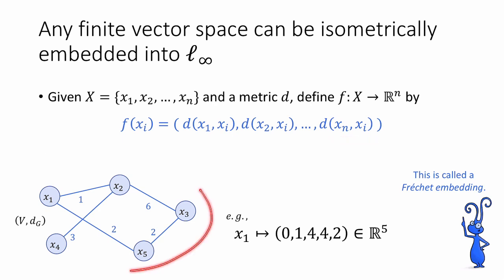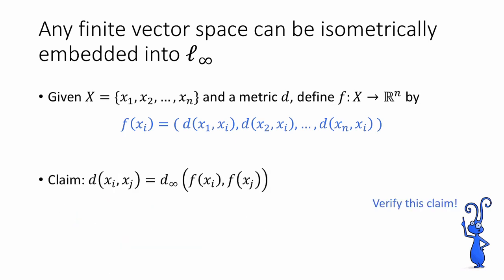So for example, in this graph metric space that we had before, the point x₁ would map to the vector (0, 1, 4, 4, 2), because the distance between x₁ and itself is 0, the distance between x₁ and x₂ is 1, the distance between x₁ and x₃ is 4, the distance between x₁ and x₄ is also 4, and the distance between x₁ and x₅ is 2. So that's the embedding, and I claim that this embedding is an isometry.